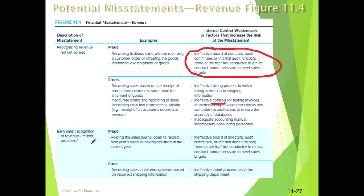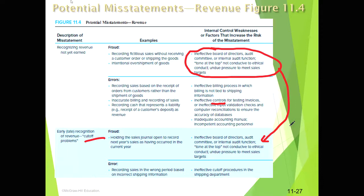Similarly, early recognition of revenue involves a cutoff issue — for example, holding the sales journal open to record transactions from next year in order to inflate current year performance. The same type of weakness applies: an overall control environment weakness allows fraud to occur or possibly incentivizes it. If there is undue pressure to meet certain revenue targets, that creates a higher incentive for fraud.